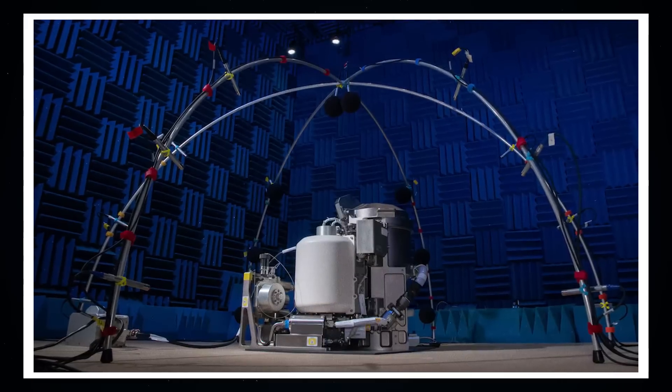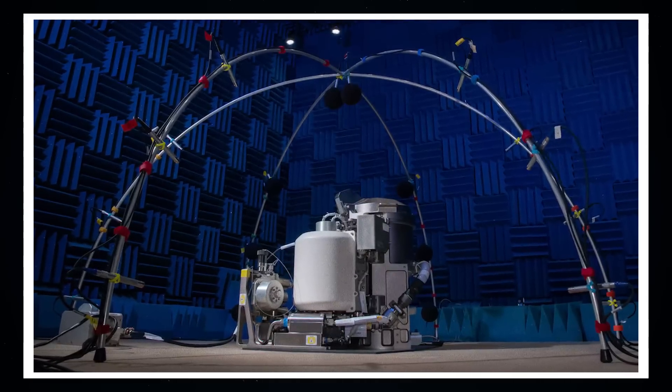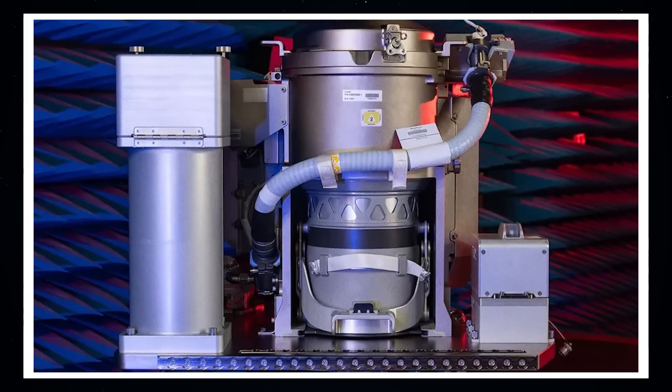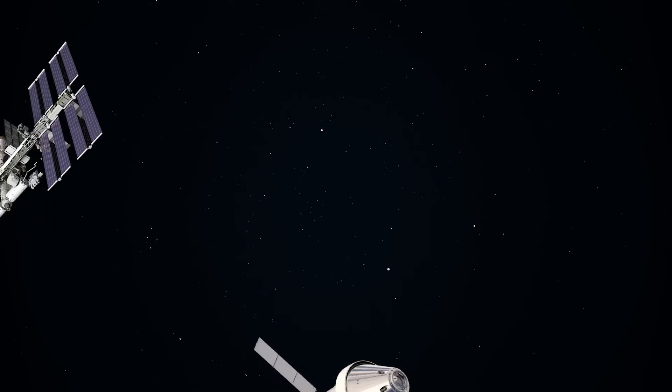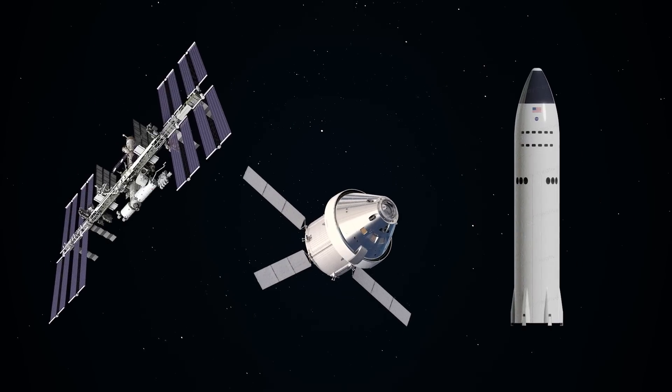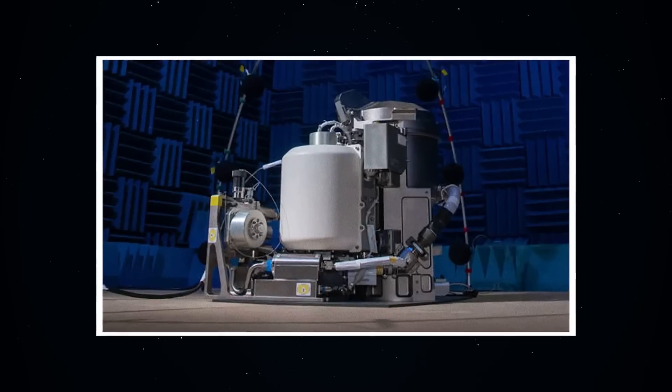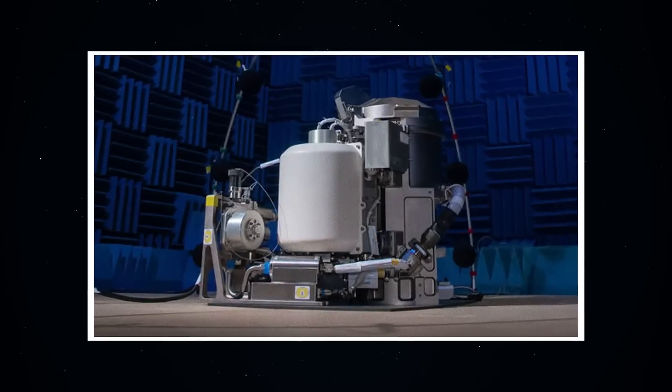One of the key objectives with the new space toilet was to make something that could be standardized across all NASA-involved spacecraft and orbital infrastructure like the ISS, the Orion Lunar Capsule, and the HLS Moon Lander. NASA made the new design as simple, compact, and easy to maintain as possible.